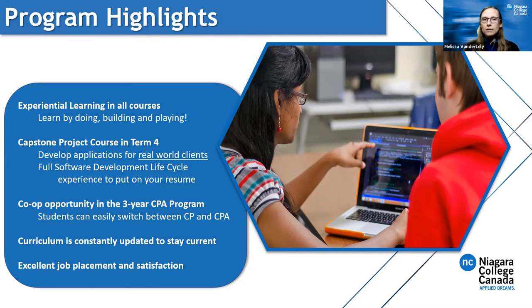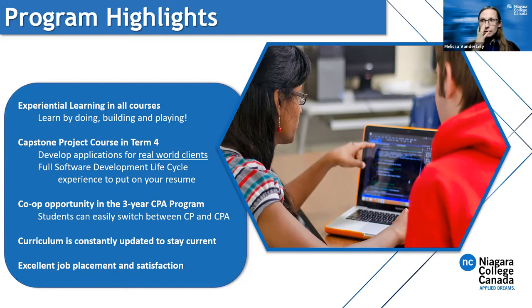If you're in the three-year program, you get to do a co-op, which is a paid position where you work in the industry over the summer term. Typically students do their co-op from May to August. After that, you come back for the sixth term and finish up the three-year diploma.